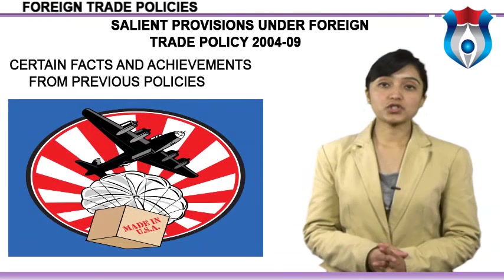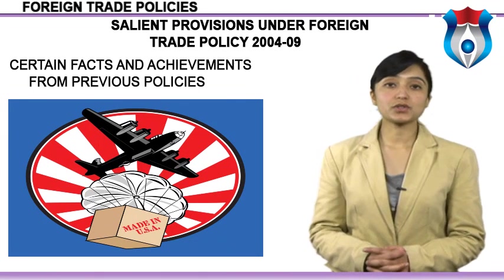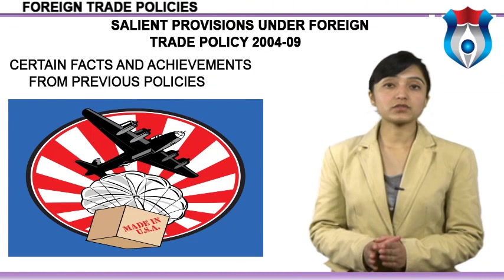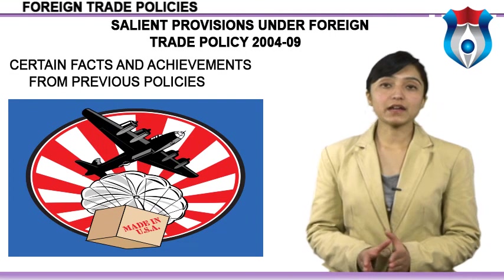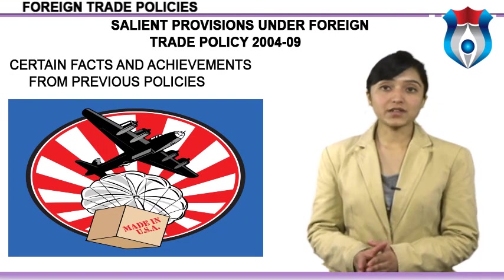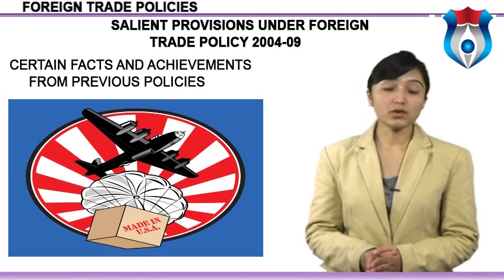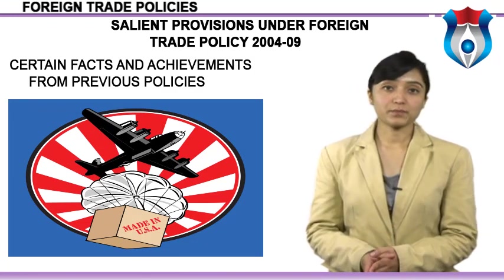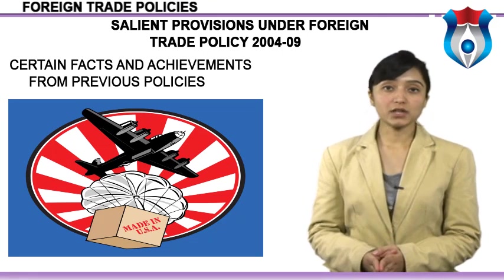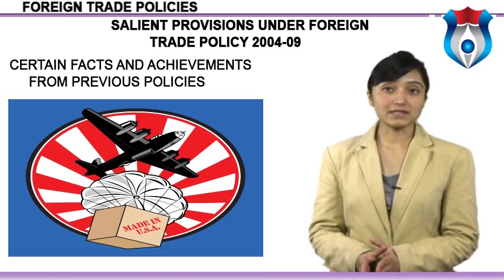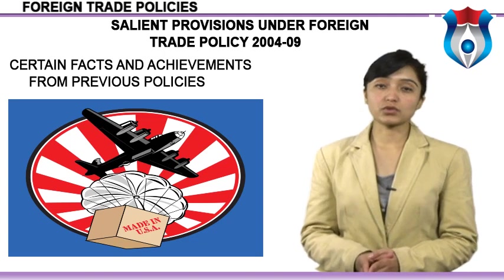Certain facts and achievements from previous policies: in 2004, exports stood at a little over INR 315 billion; in 2007-2008 they have exceeded INR 7,750 billion. Exports are not just double what they were four years ago, but two and a half times that. We have managed an average cumulative annual growth rate (CAGR) of 23.3% year on year, way ahead of the average growth rate of international trade.